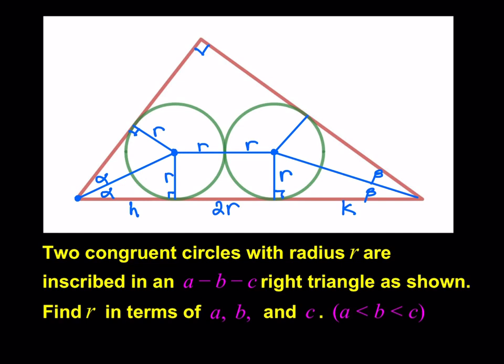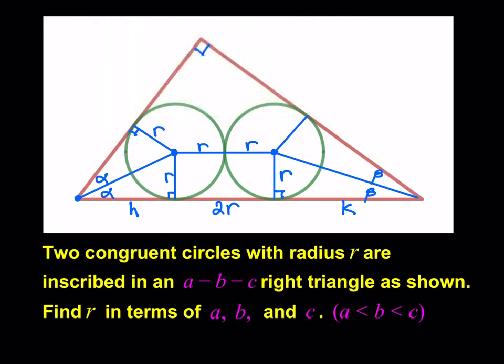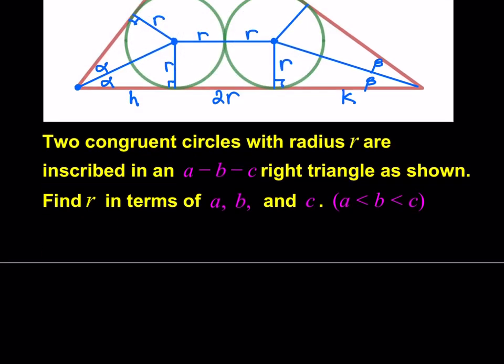So, I'm going to use tangent. I'm going to write tangent alpha. So, tangent alpha is going to equal r over h, and tangent beta equals r over k. Beautiful.